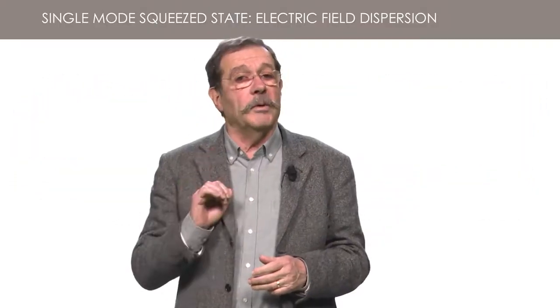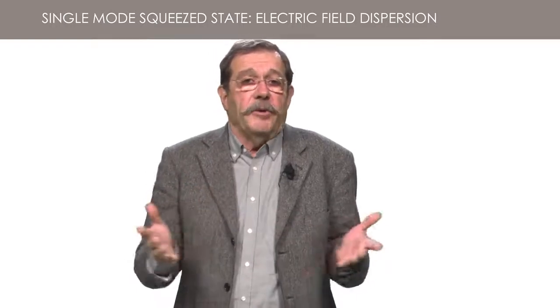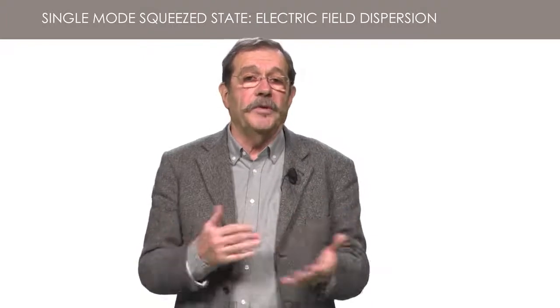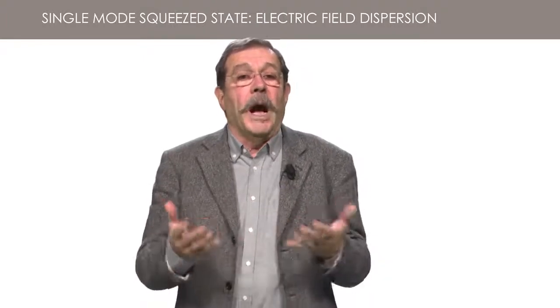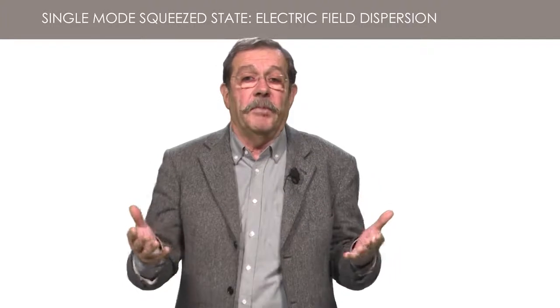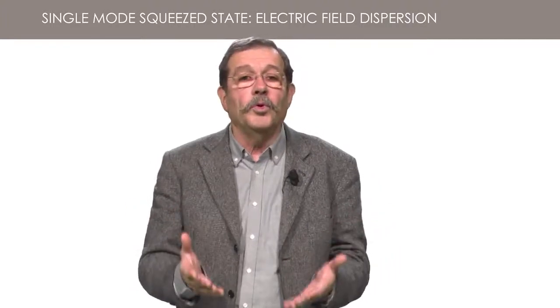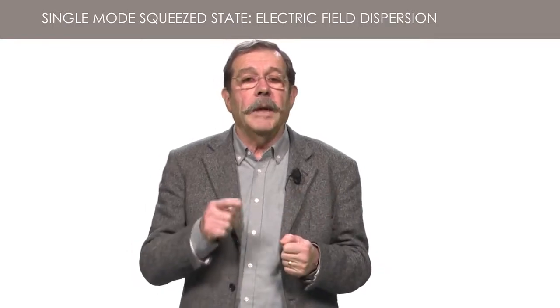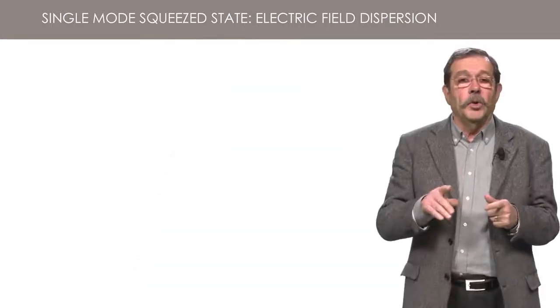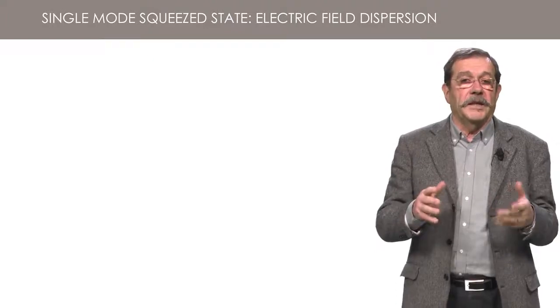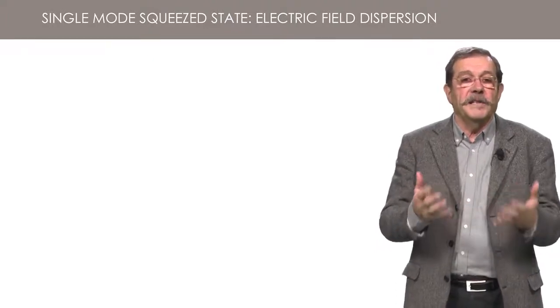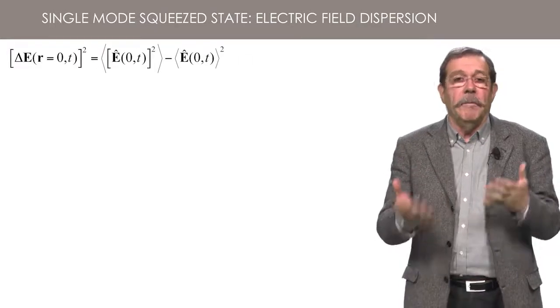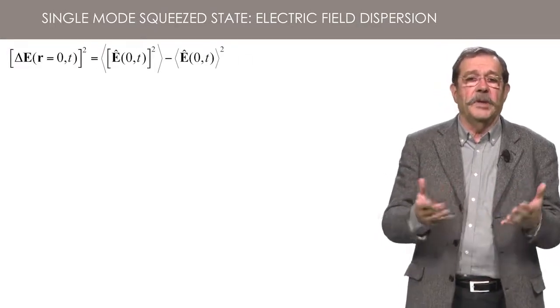As usual in quantum mechanics, it is not enough to calculate the average of an observable. It is also essential to know the dispersion of the results, either by giving the complete probability law or at least the root mean square dispersion. This is what we will calculate here. You know that the variance, that is to say the square of the RMS dispersion, is equal to the average of the square minus the square of the average of the observable. We do that calculation at the position R equals zero, where the electric field depends only on time.